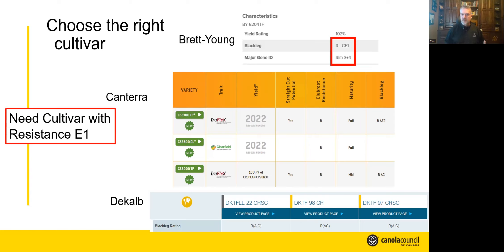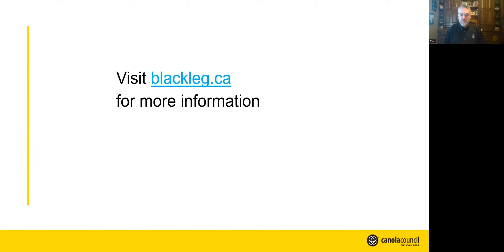It won't be complete control because the sample submitted to the lab might not be completely representative of the entire variation in the field. But certainly we will know that this variety will control the race that was present in the sample. I really hope that this helps in knowing how to use these blackleg race tests and how to select the right canola cultivar. If you have more questions, visit blackleg.ca for more information. A special thanks to SAS Canola for the assistance in building this video. Thank you very much.